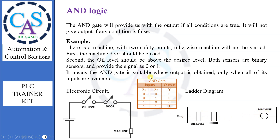From the table it can be seen that: if both inputs are low, then output will be low. If input 1 is low and input 2 is high, then output will be low. If input 1 is high and input 2 is low, then output will be low. If both inputs are high, then the output will be high.